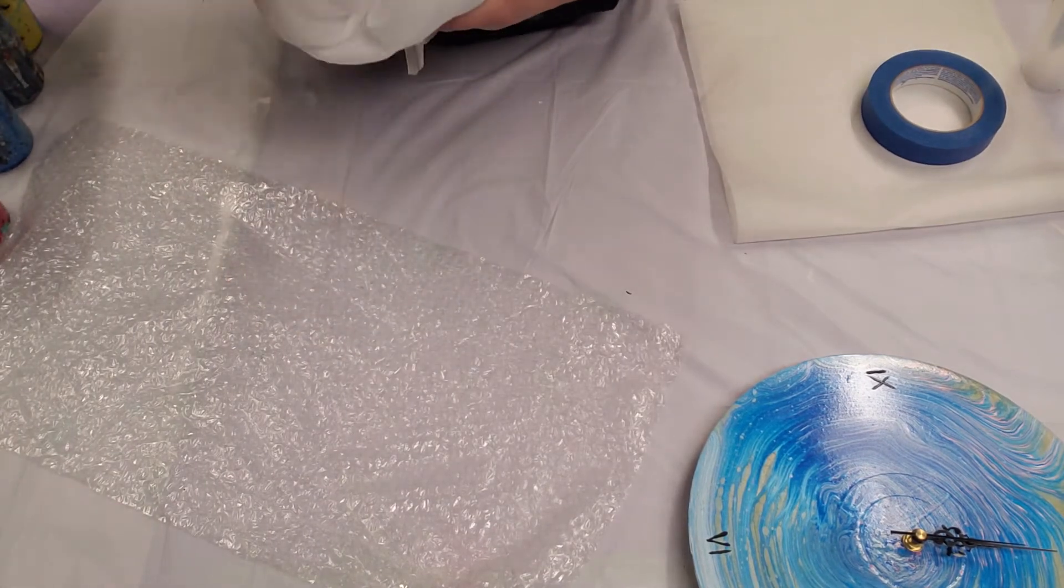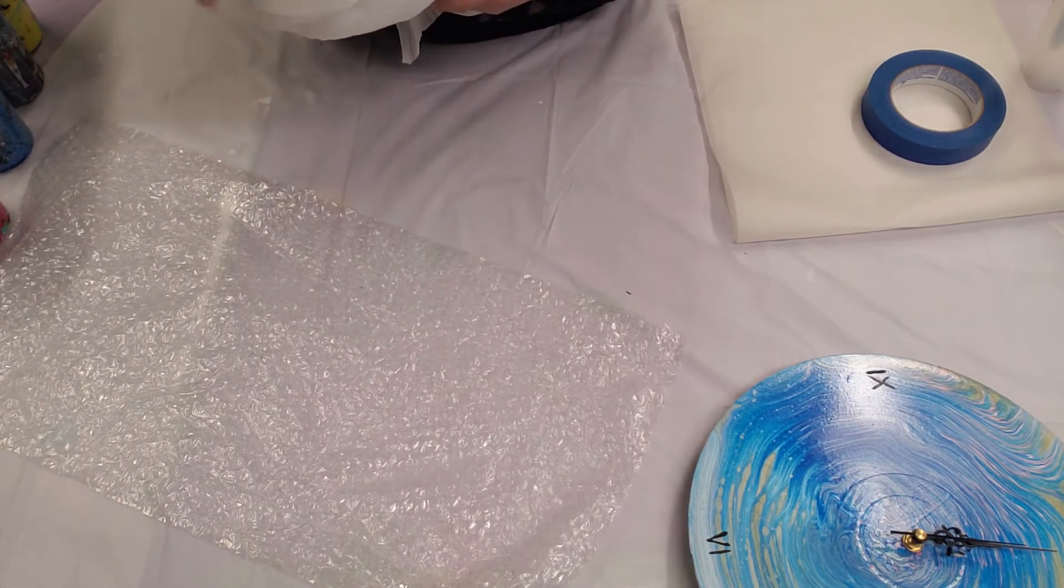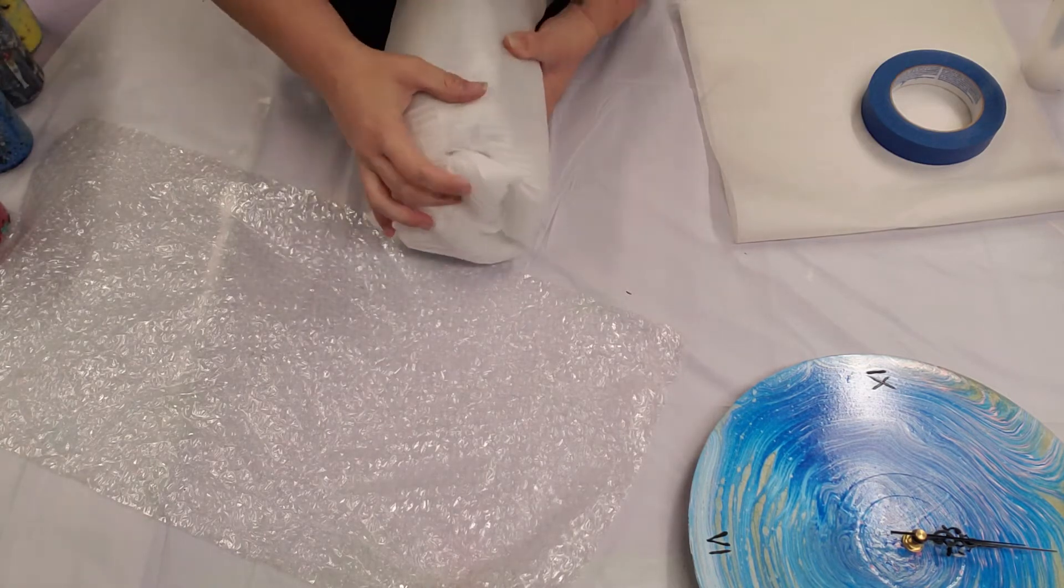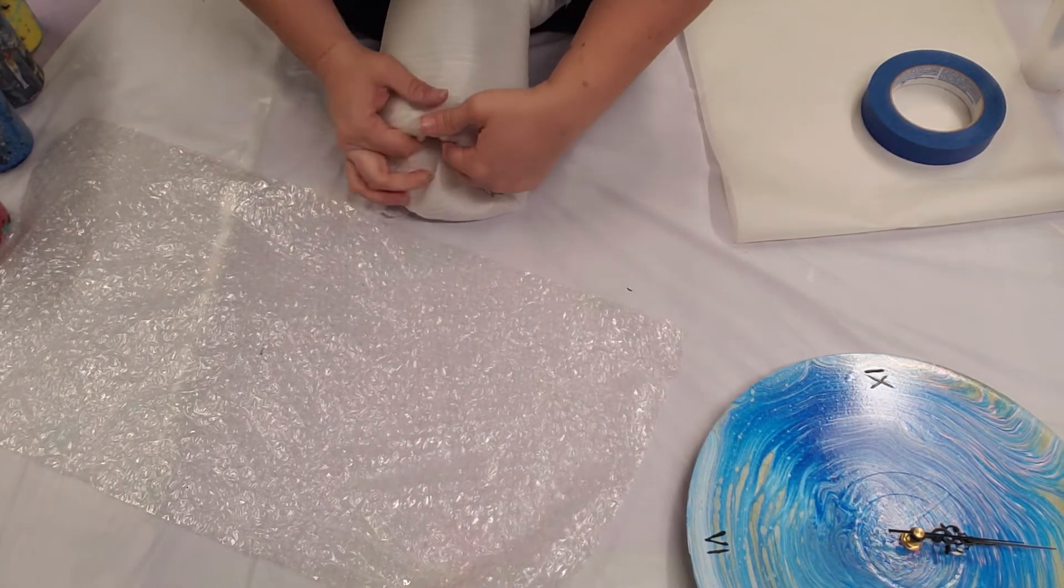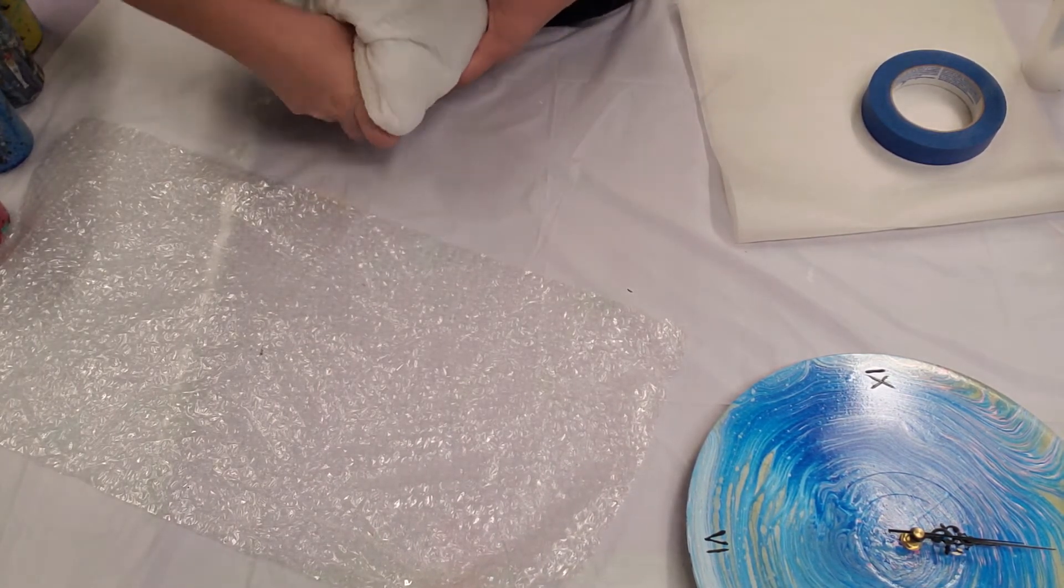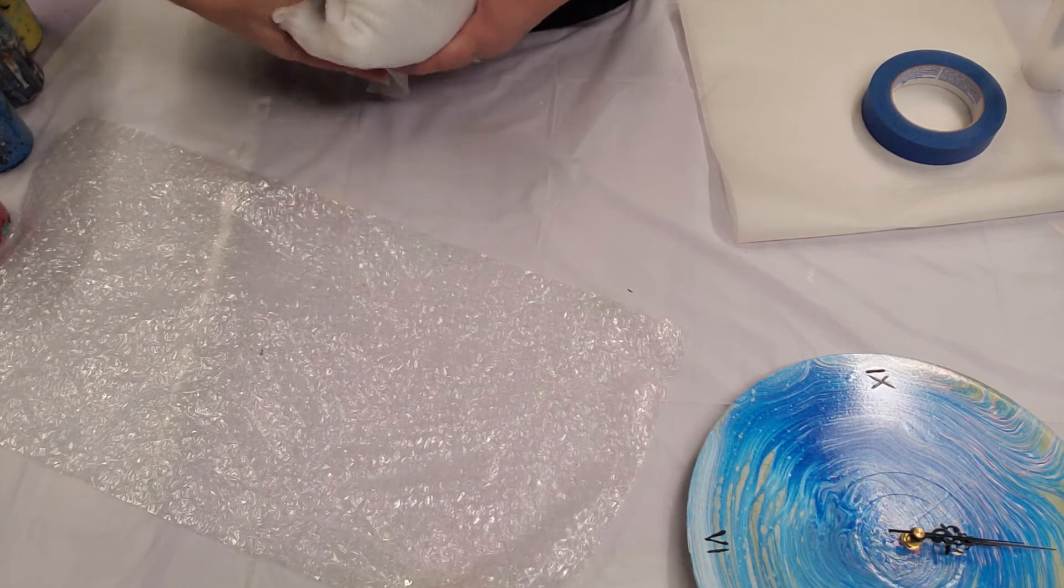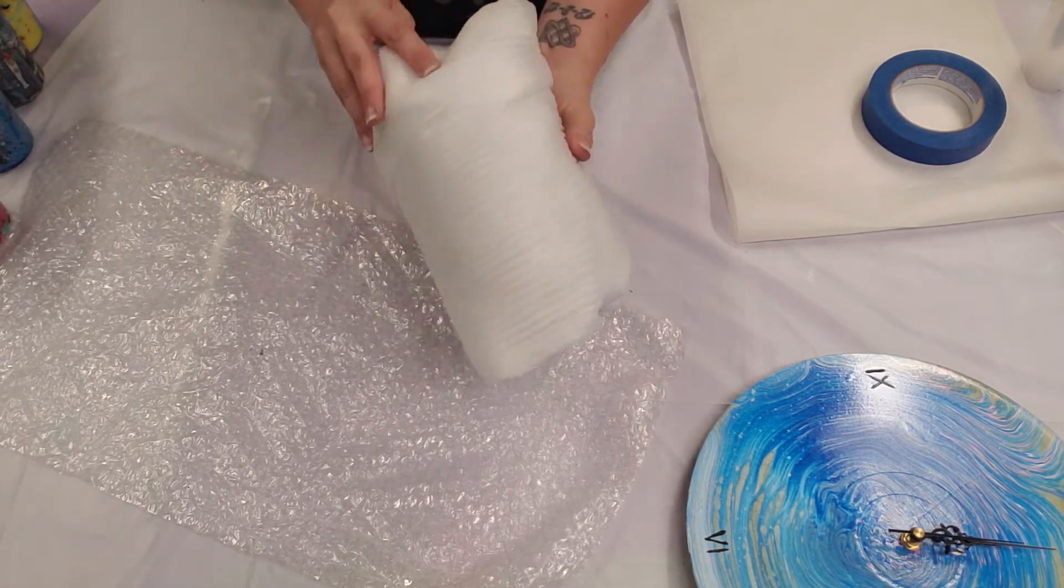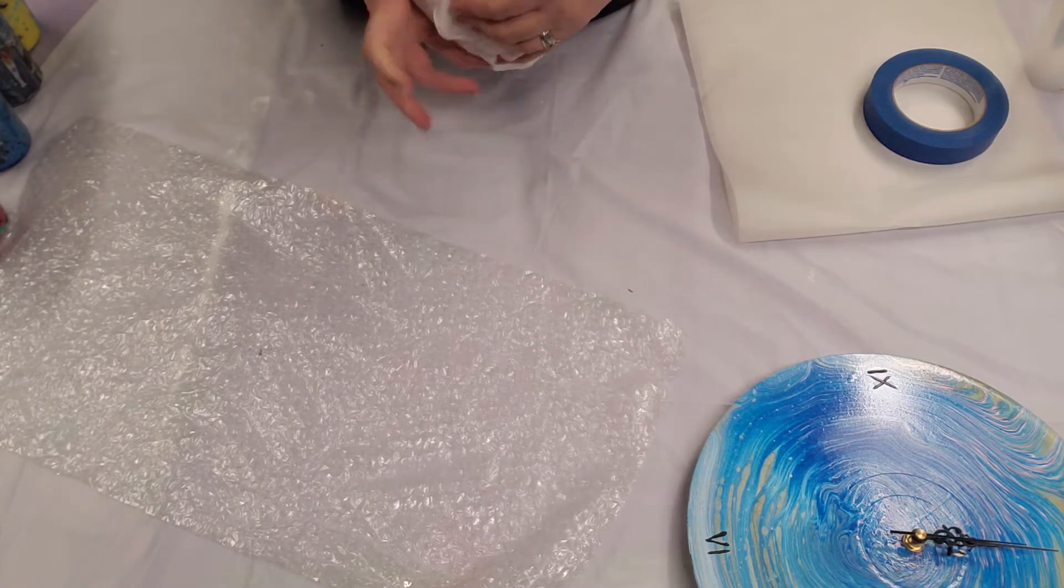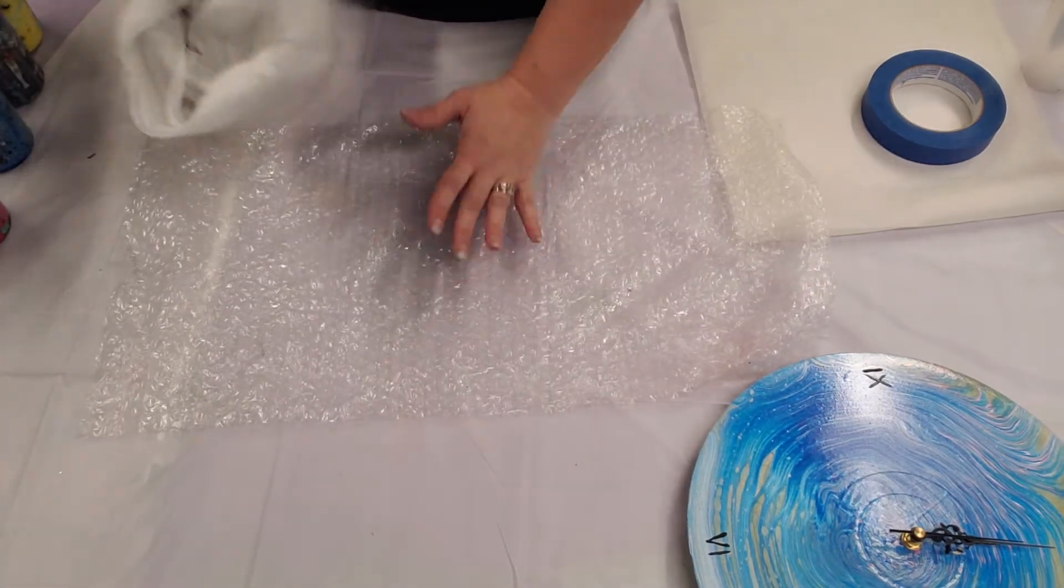And then on the top here I'm gonna just tuck in all this excess and that will help also protect the inside. You can pre-stuff it with newspaper, paper, or anything else. I just do this though, it's really simple. And then we do have a little excess on the bottom here that can just kind of be folded up.